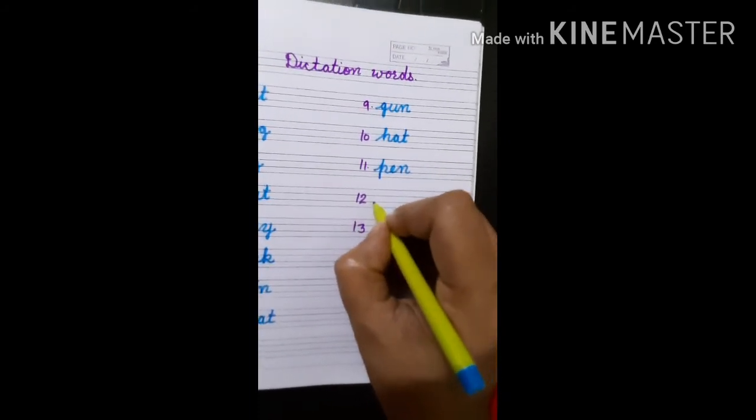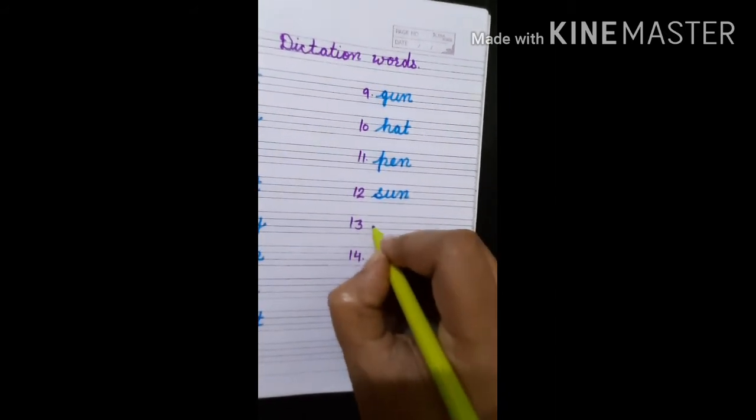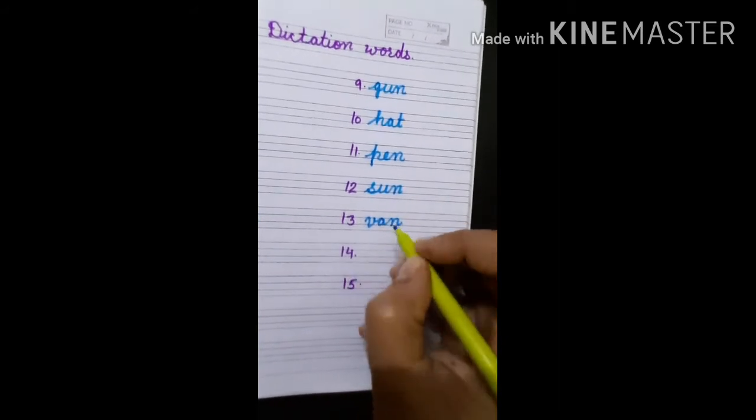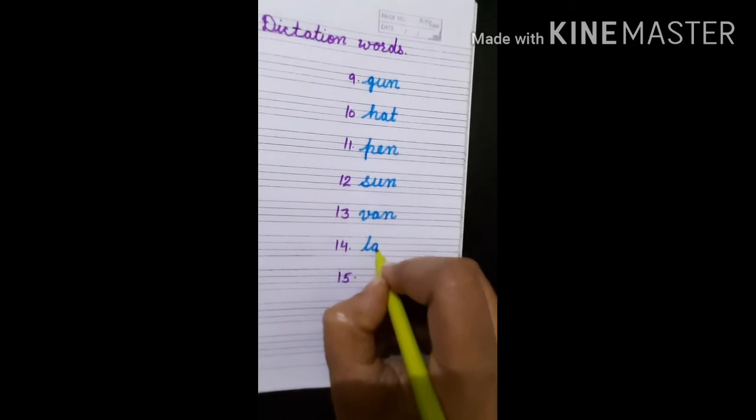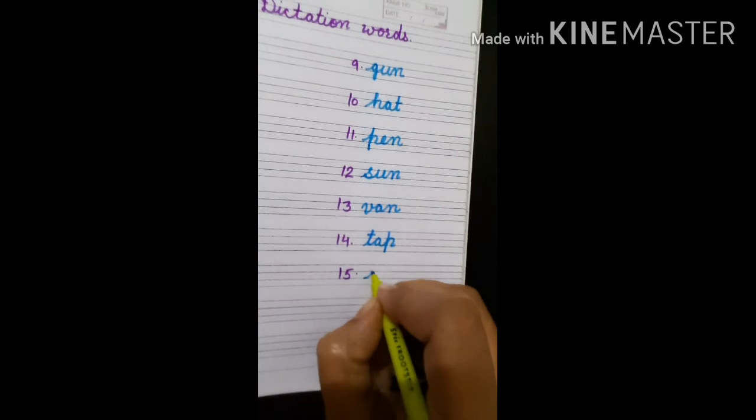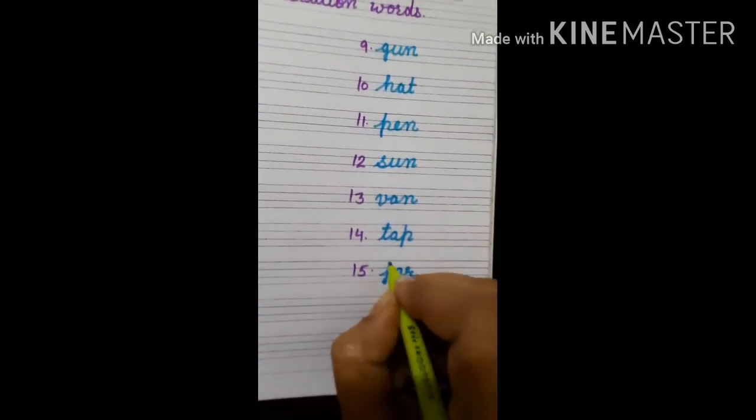Number twelve: sun - S U N - sun. Number thirteen: van - V A N - van. Number fourteen: tap - T A P - tap. Number fifteen: jar - J A R - jar.